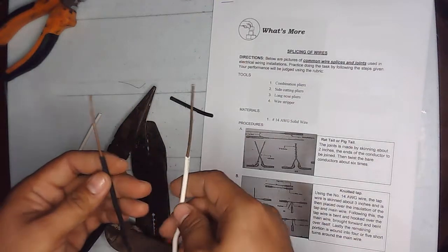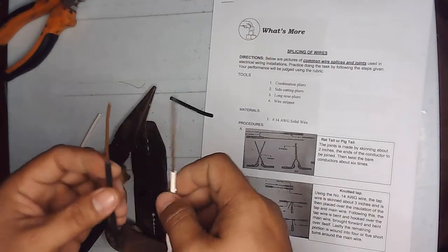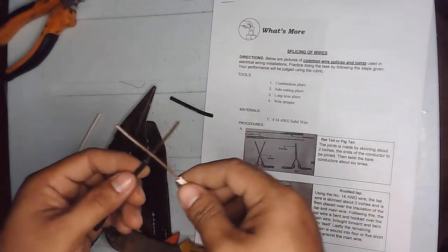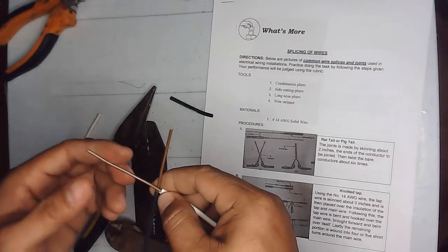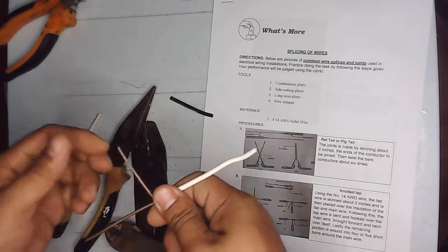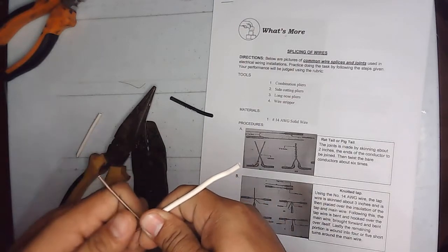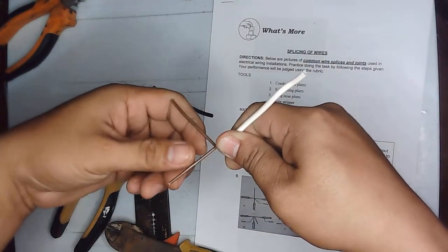After stripping both ends of the wires, you need to form an X, then using your bare hands, just twist the wires together.